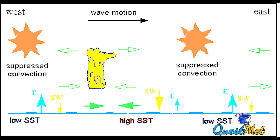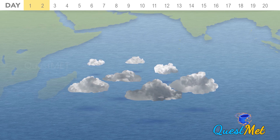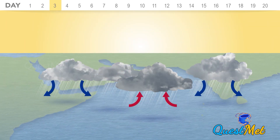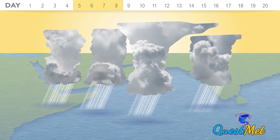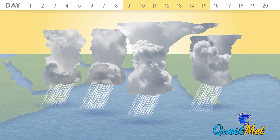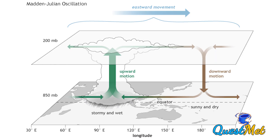The Madden-Julian Oscillation is the largest intraseasonal variability in the atmosphere that occurs as a result of air-sea coupling. It is seen as a unidirectional wave moving very close to the equator from west to east, covering different parts of the globe. As it moves into different tropical oceans, it brings along strong convective activity with a high probability of a cyclonic system. The MJO phase plot gives a clear picture of how strong the signal is and in which ocean it is situated.